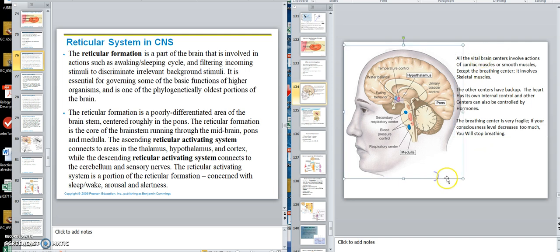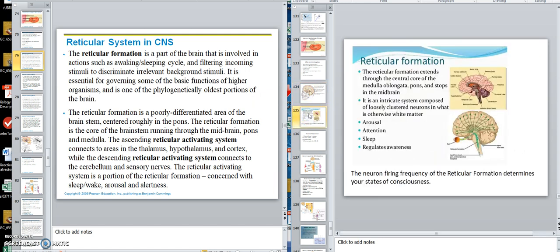So if your consciousness level drops too much, you will stop breathing. Now, what keeps you awake then? Our next thing is to talk about the reticular formation in the brain. The reticular formation extends throughout the central core of the medulla oblongata, pons, and stops in the midbrain. Now remember, this brain stem was where all your vital centers are.